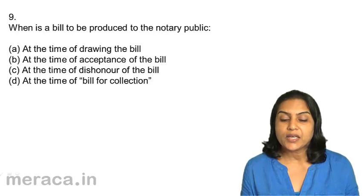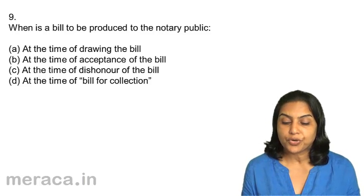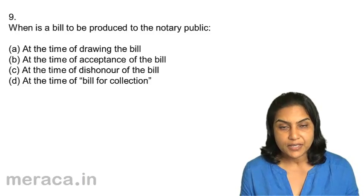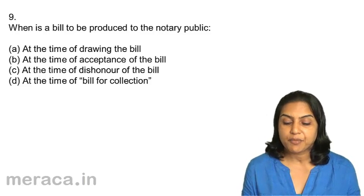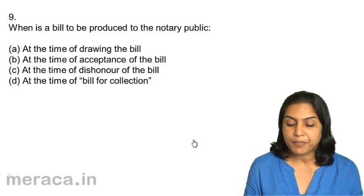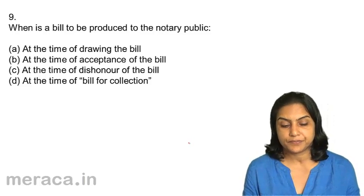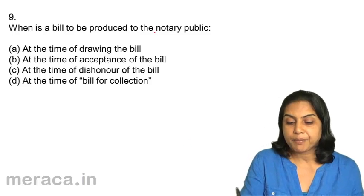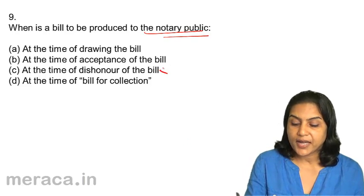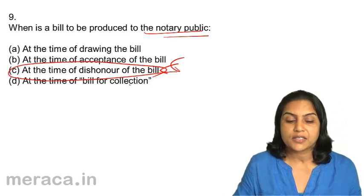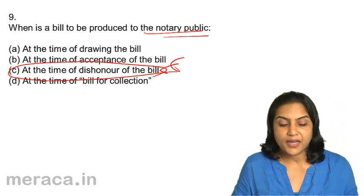Question 9: When is a bill to be produced to the notary public? A. At the time of drawing the bill. B. At the time of acceptance of the bill. C. At the time of dishonour of the bill. D. At the time of bill for collection. Notary public — only at the time of dishonour. Therefore, correct answer 9C.